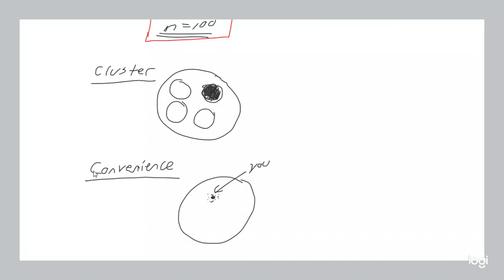The drawback of convenience sampling is that people around you are more likely to think like you, biasing results in a particular direction. Even if they don't think exactly like you, being physically accessible to you means they're probably similar in other ways too, creating a high risk of bias. But there is a benefit — it's easier, cheaper, and quicker to do the study. Sometimes speed of obtaining information can be more important than quality, depending on the circumstances.